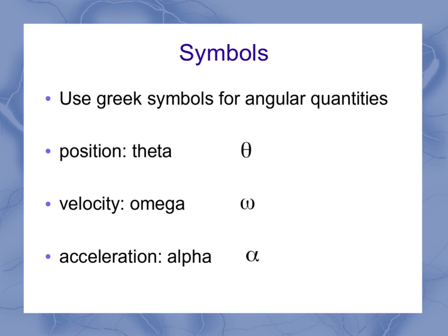So that's angular position, angular velocity, and angular acceleration. A lot of students start calling this a w and just calling this an a, but that's an alpha and that's an omega. Make sure you use the right symbols.